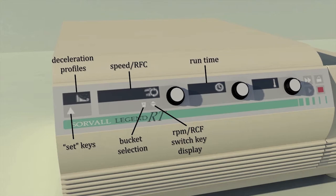You do not want the rotor to decelerate too rapidly and disturb those pellets or gradient lines that you created, so you would want it set on a slow deceleration.